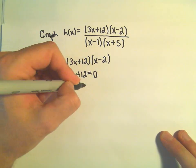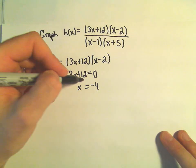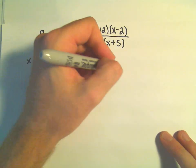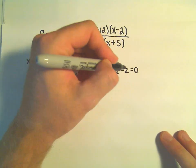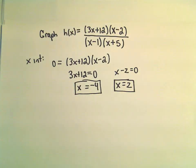if we set 3x plus 12 equal to 0, I can subtract 12 and divide by 3, and that would give me x equals negative 4. And then if we set x minus 2 equals 0, we can just add and get x equals 2, and that'll be my other x-intercept.